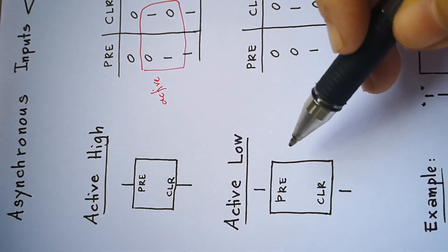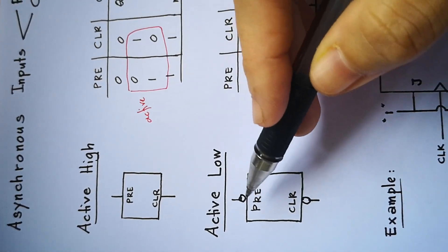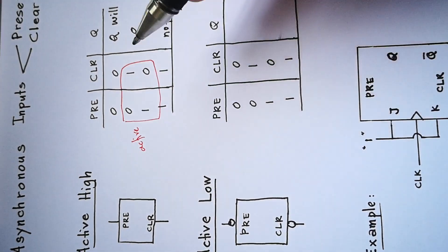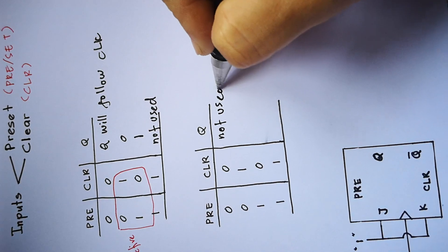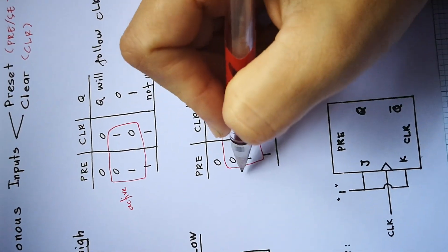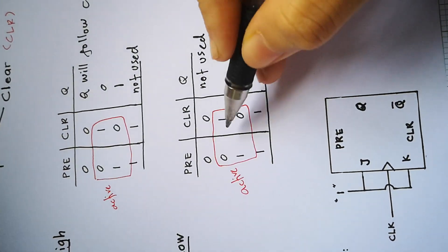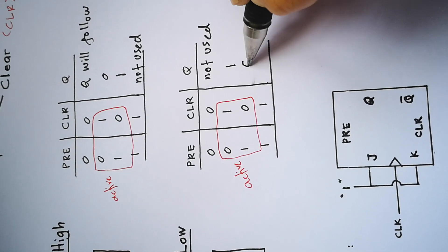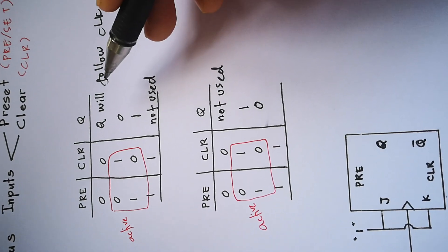Now look at active low. For active low, we have a bubble here. If you see this bubble, it is active low pre and clear. Active low is inversely from active high. So 0, 0 will not be used. Now 0,1 and 1,0: for active low, when clear=0 it is active means Q=0; when preset=0 it is active means Q=1.